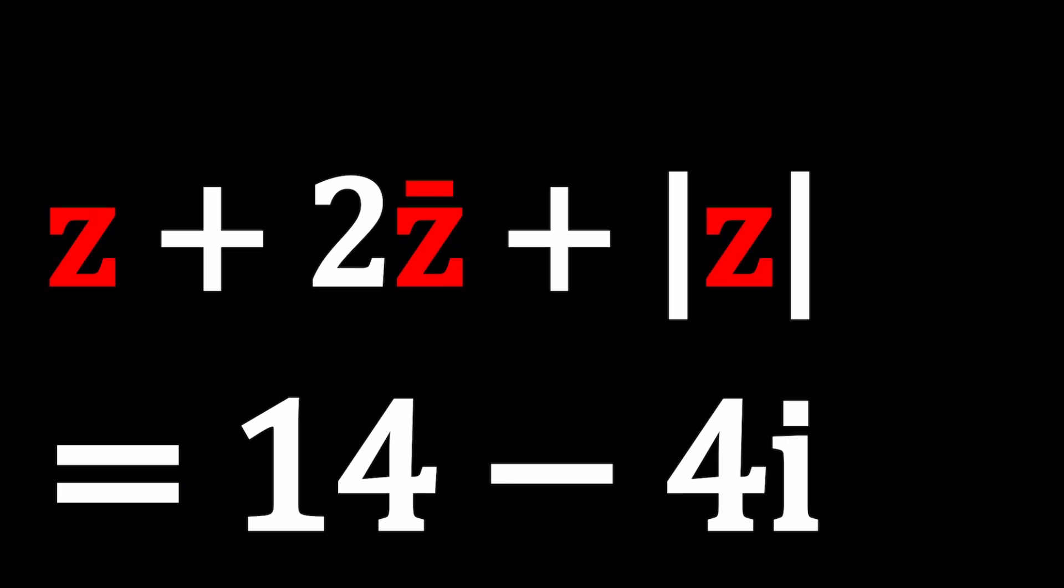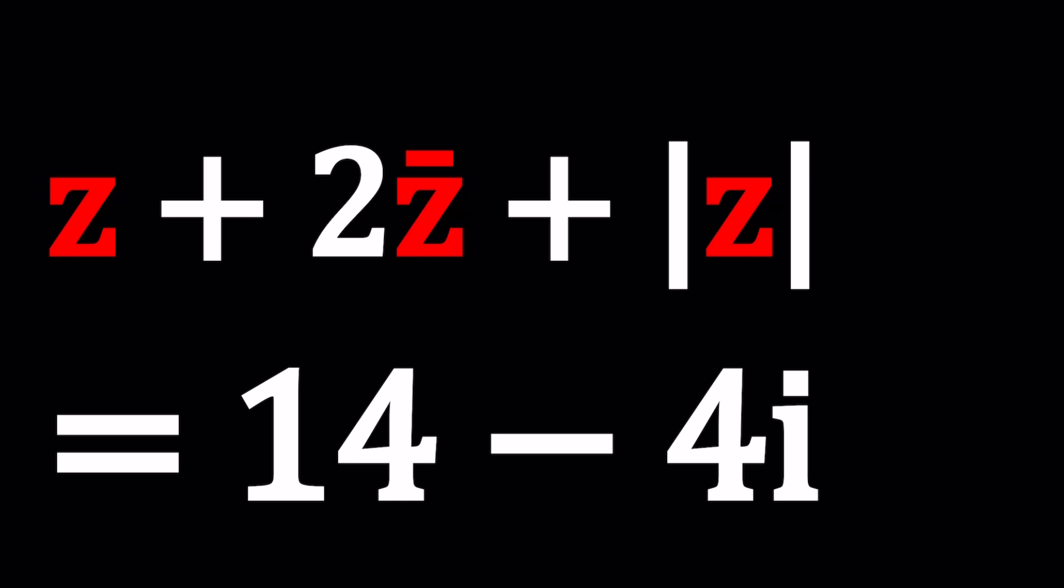Z, Z bar and the absolute value of Z. In one of my previous videos I was kind of mentioning that we could put these all together and this is how we solve it. Do you remember that video? Anyways, let's go ahead and talk about this one. So we have Z plus 2Z bar plus the absolute value of Z or the modulus equals 14 minus 4i and we're going to be solving for Z values.